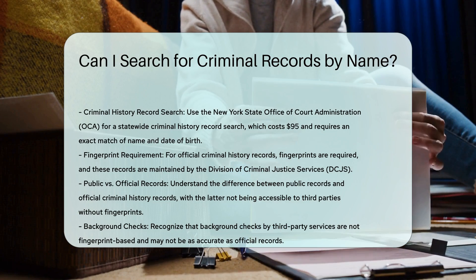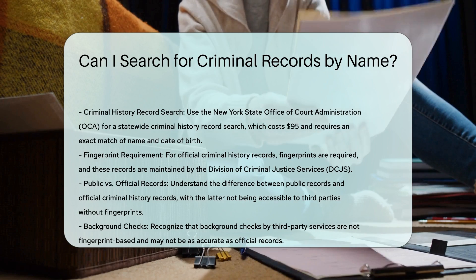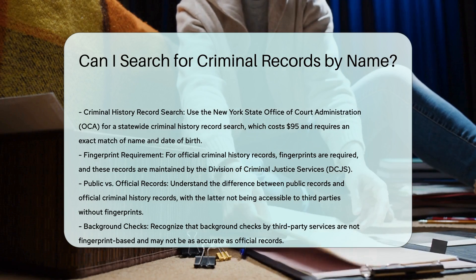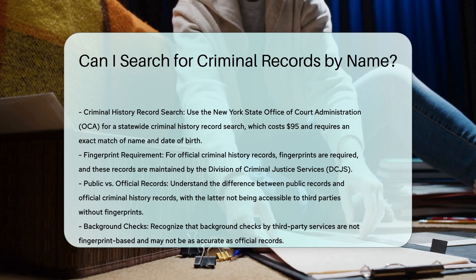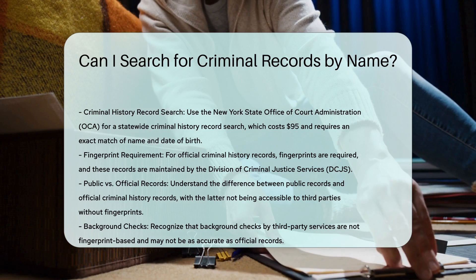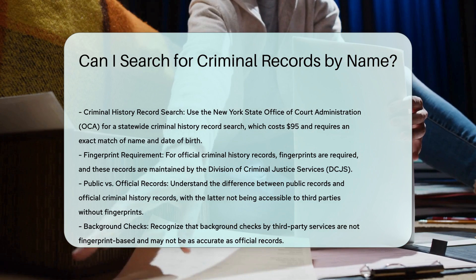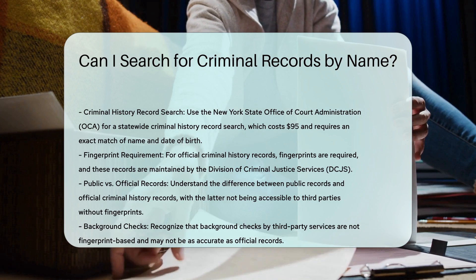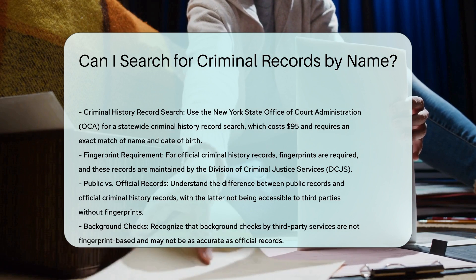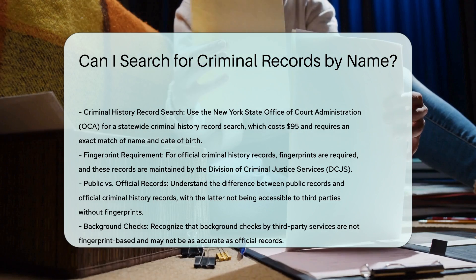In-person searches. If online searches are not fruitful, you can perform searches in person at the court's record custodian office. For example, background checks are only available in person at the Justice Center for certain jurisdictions.